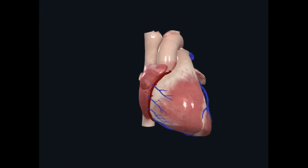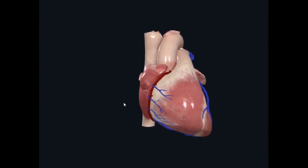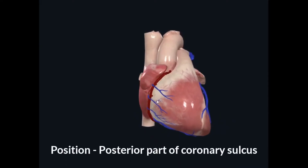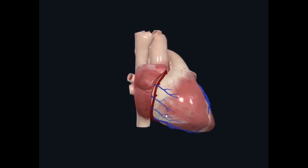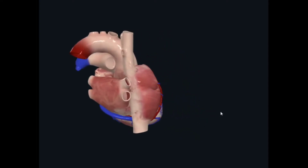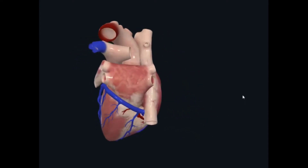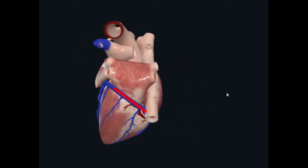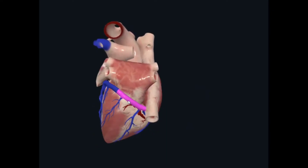Now we will see the coronary sinus. The first thing is that coronary sinus is present on the posterior part of coronary sulcus. We have to go on the posterior side of the heart, and when you see the posterior part of the coronary sulcus, you will find that this is the coronary sinus.